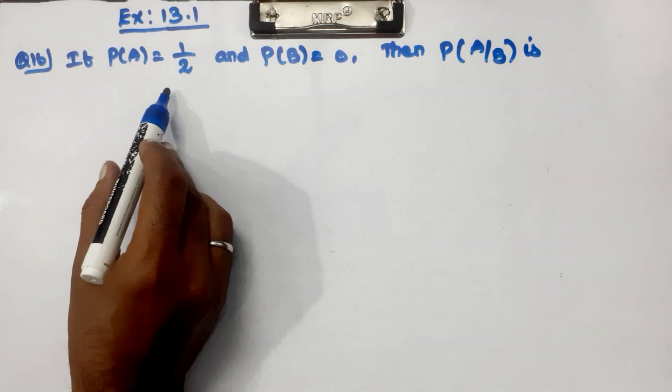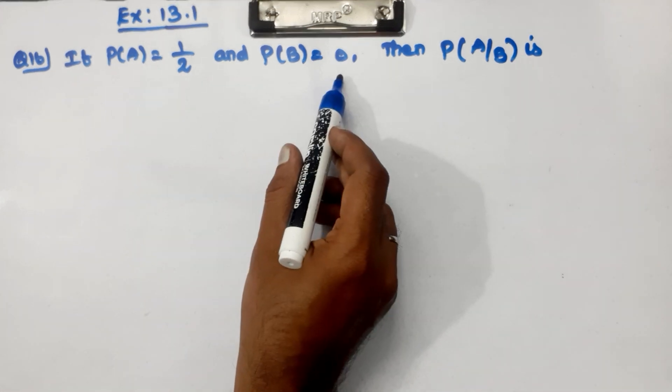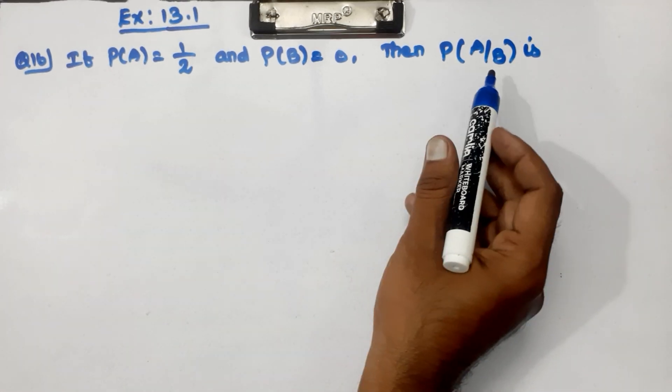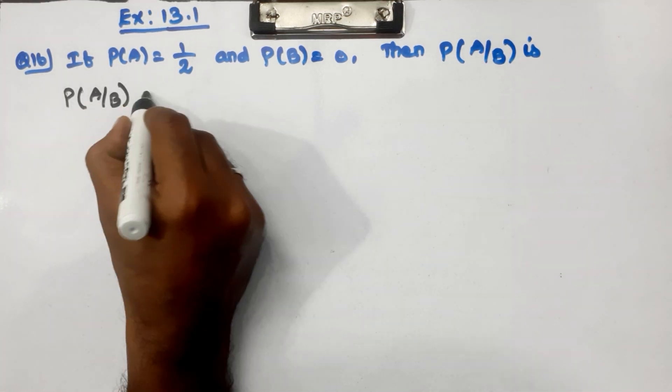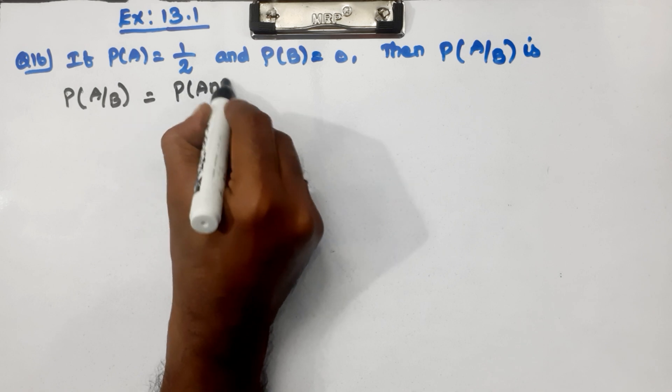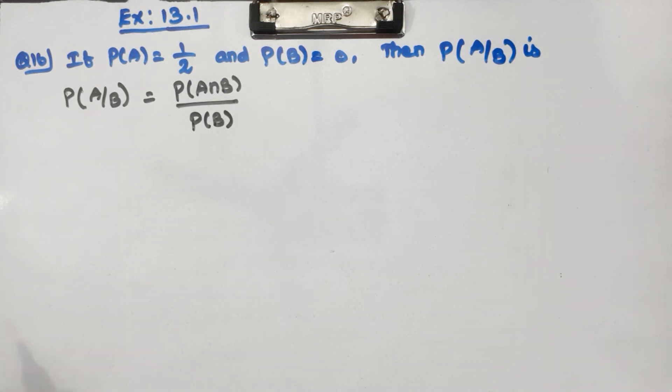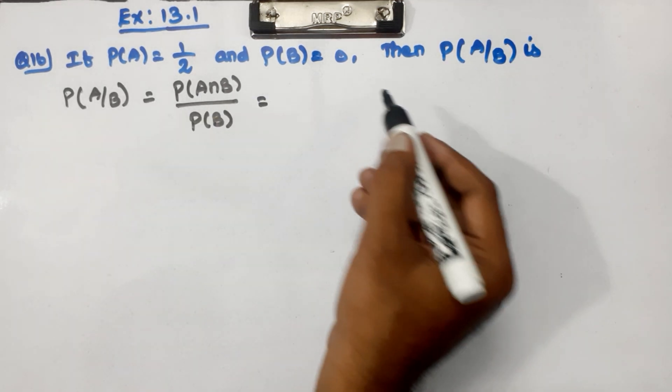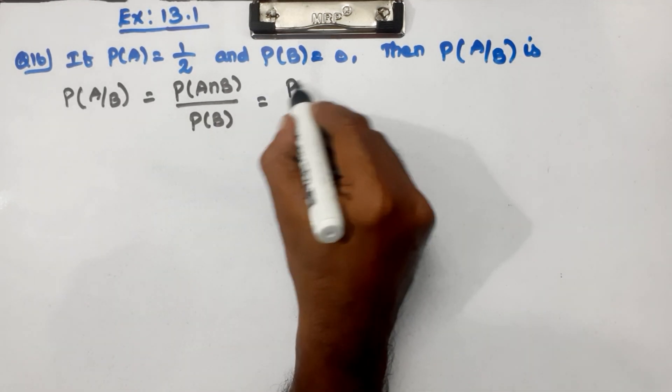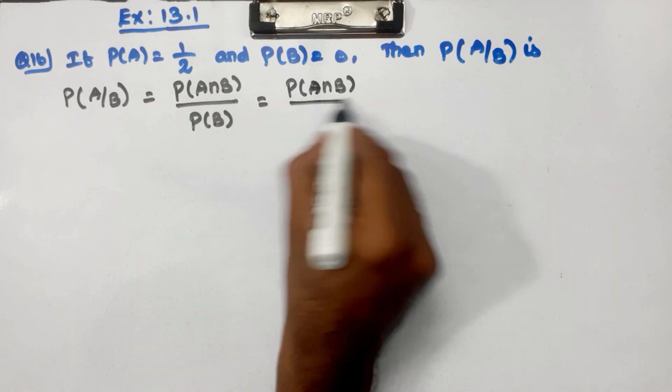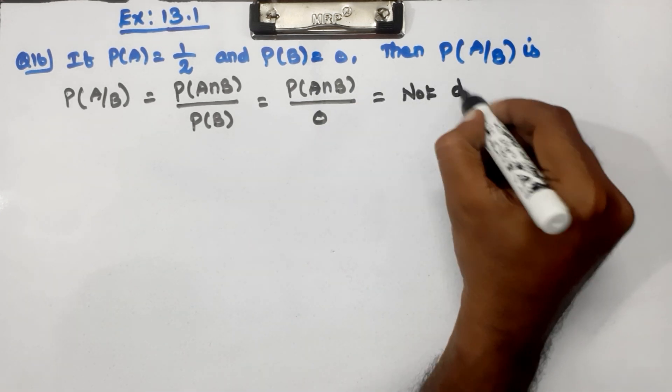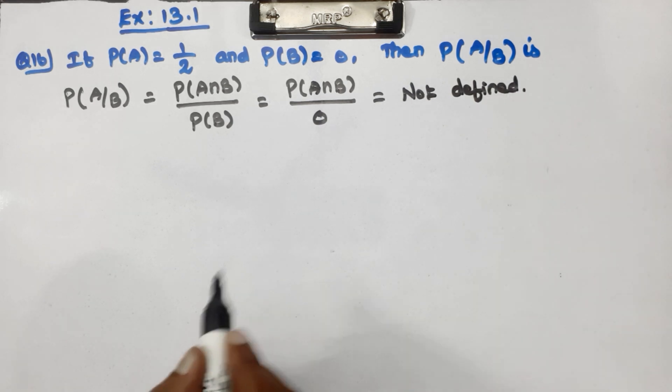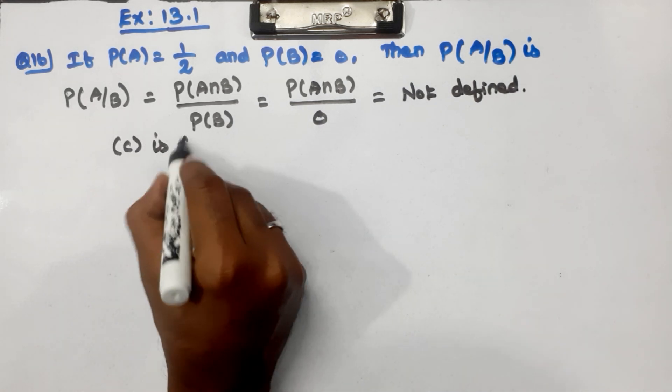The formula is P(A|B) equals P(A intersection B) divided by P(B). Since P(E intersection F) is 0, this is not defined. So option C is the correct answer.